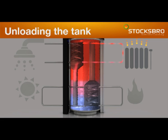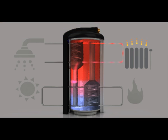When it comes to unloading the tank, we have in this case a radiator system as a consumer. The return temperature is 30 degrees and this water will drop. The stratifying pipe is then distributing it to the lower part of the tank.